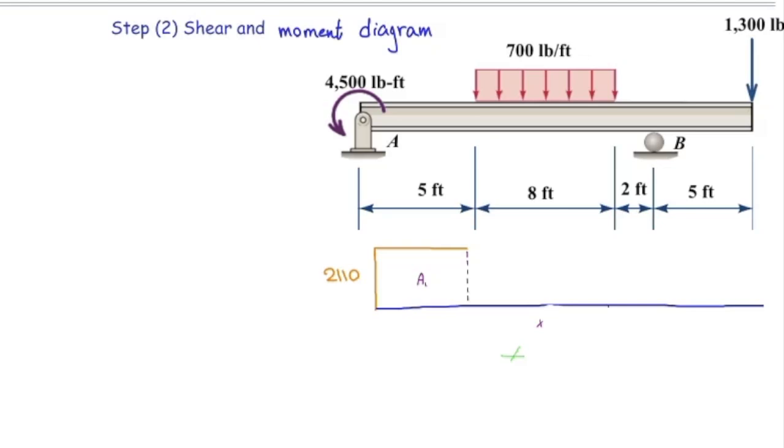You tell me, how much would be the magnitude of shear force once I get to the end of that distributed load? The change in the shear diagram would be equal to the total distributed force. How much is that distributed force? 700 multiplied by 8, which is 5,600. So there will be a change of 5,600 pounds.